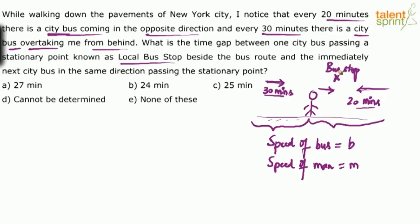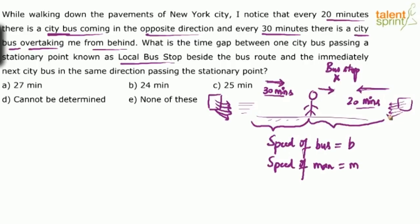There is a source from which buses come out at regular intervals and move in one direction. Similarly, buses come from the other side at regular intervals. All buses travel at the same speed. As the person walks in one direction, buses from the opposite direction arrive every 20 minutes, and buses from behind arrive every 30 minutes.